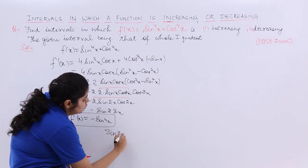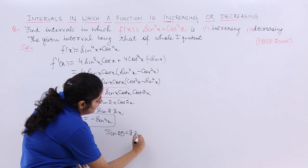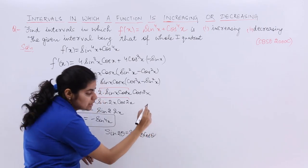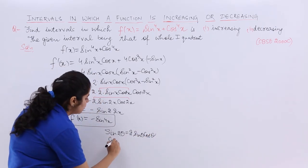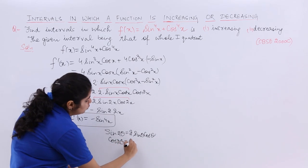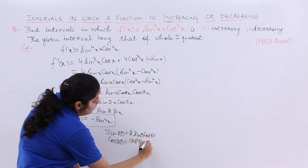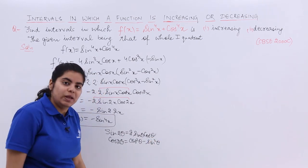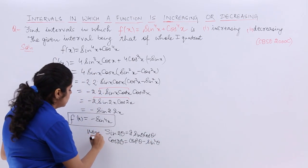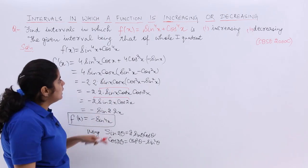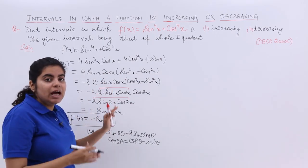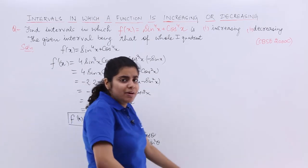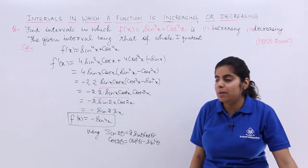The first formula is sin(2θ) = 2sin(θ)cos(θ). The second formula is cos(2θ) = cos^2(θ) - sin^2(θ). These two formulas were used in these steps. We have got f'(x), which is very good. We have got the first step correct.